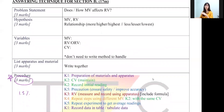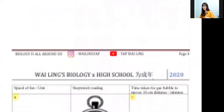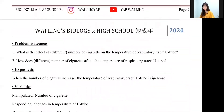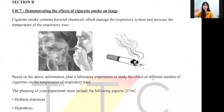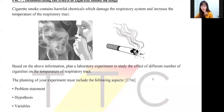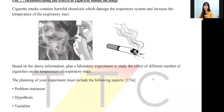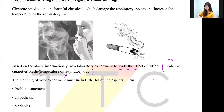Let's look at a question so you can apply this knowledge. This question has not appeared in SPM before, so take note. 'Cigarette smoke contains harmful chemicals which damage the respiratory system and increase the temperature of the respiratory tract. Plan a laboratory experiment to study the effect of different numbers of cigarettes on the temperature of the respiratory tract.' Find your MV and RV in the question — the words after 'the effect of' give you the MV and RV. 'Different number of cigarettes' is your MV.